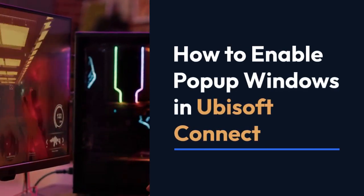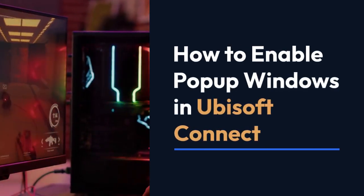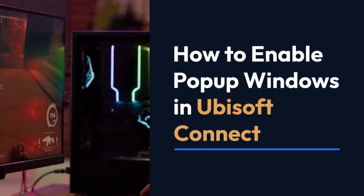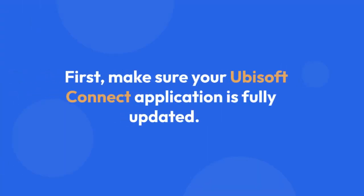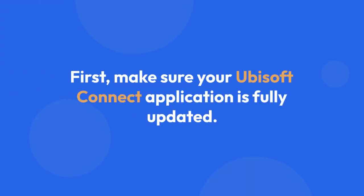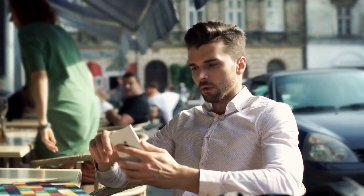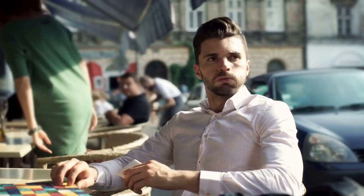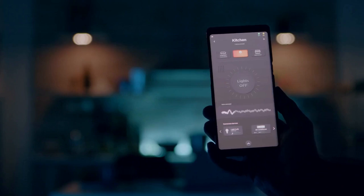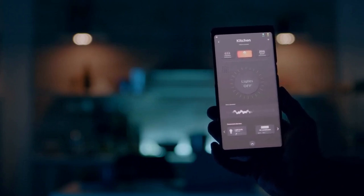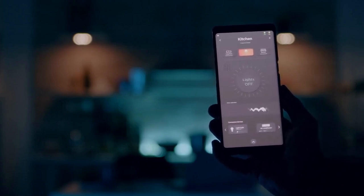We're going to explain how to enable pop-up windows in Ubisoft Connect, because sometimes they get disabled and you miss important game news or updates. First, make sure your Ubisoft Connect application is fully updated. You can check for updates within the application itself — usually there's a notification or a setting that lets you check for updates.